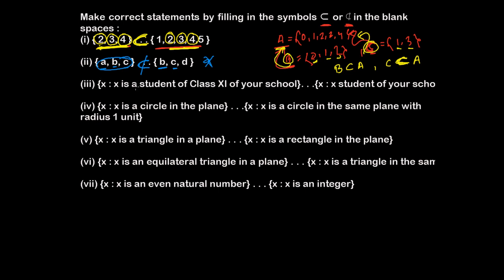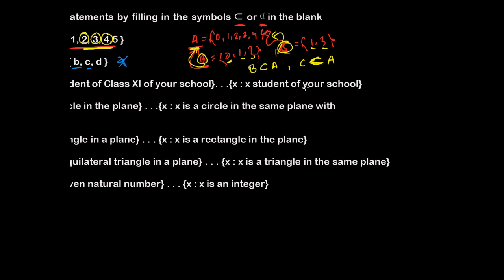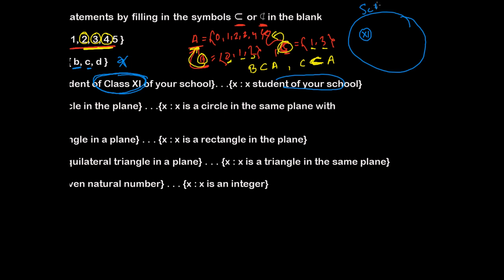Another example: suppose X is the set of students of class 11 in your school — say 30 or 40 students. And the second set is X such that the student is a student of your school. Definitely, all students of class 11 are also members of the school, because the school is very big and class 11 is just a small part of it. So yes, the set of class 11 students is a subset of all students of the school.